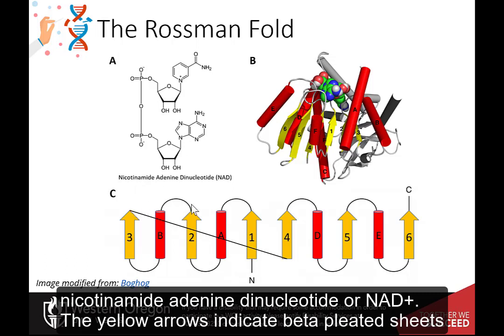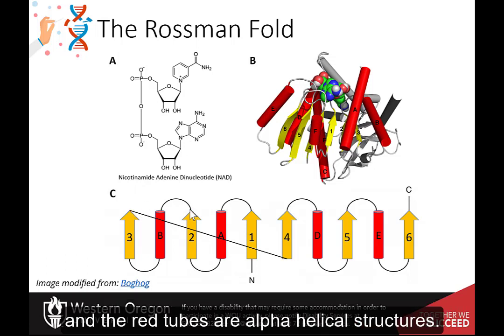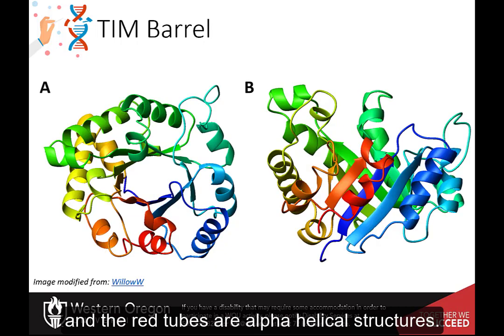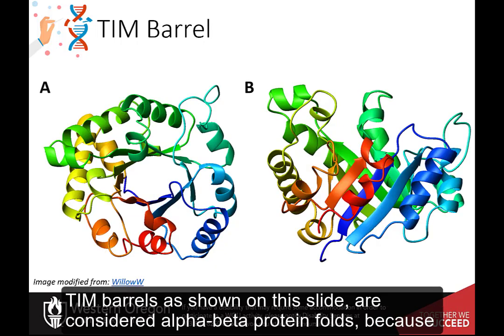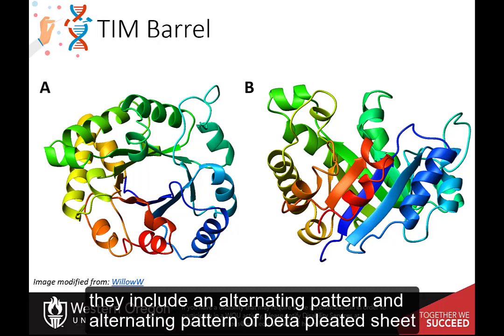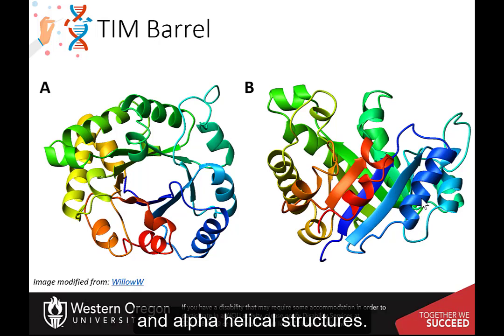The yellow arrows indicate beta-pleated sheets, and the red tubes are alpha-helical structures. TIM barrels, as shown on this slide, are considered alpha-beta protein folds because they include an alternating pattern of beta-pleated sheet and alpha-helical structures.